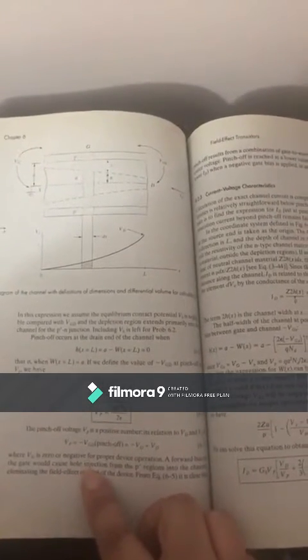When gate voltage is zero or negative, this is important for proper device operation because a forward bias on the gate would inject holes in the p-plus region, which would eliminate the field effect of the transistor.